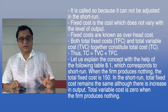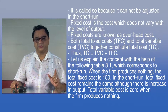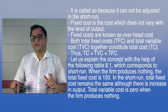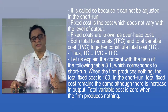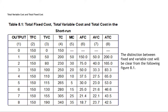Let us explain the concept with the help of Table 8.1, which corresponds to the short run. When the firm produces nothing, the total fixed cost is 150. In the short run, total fixed cost remains the same although there is an increase in output. Total variable cost is zero when the firm produces nothing. From the table we can see total fixed cost, total variable cost, and total cost. When output is zero, TFC is 150, there is no TVC, so total cost is 150.